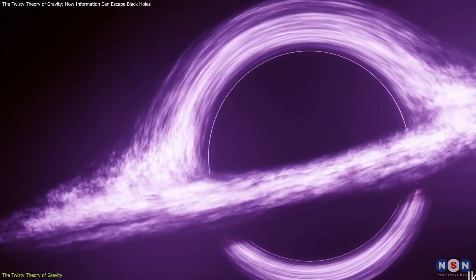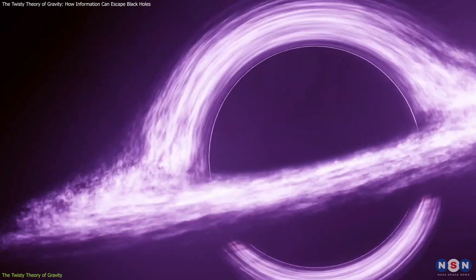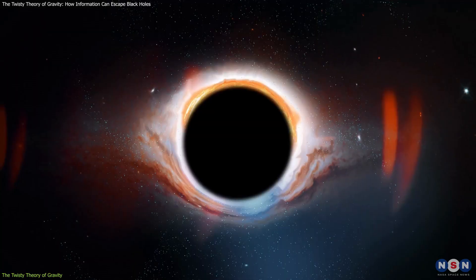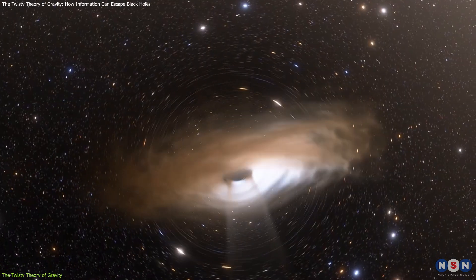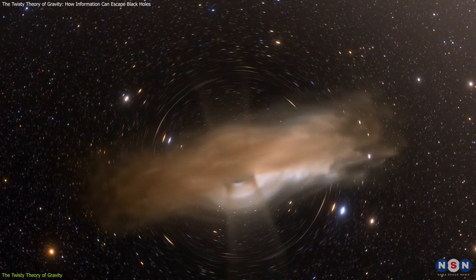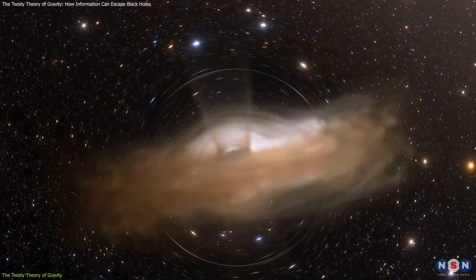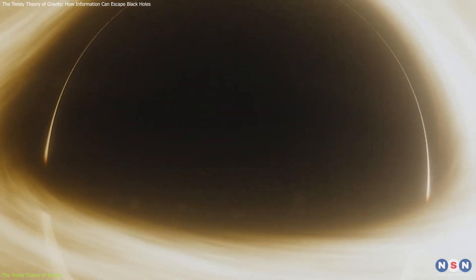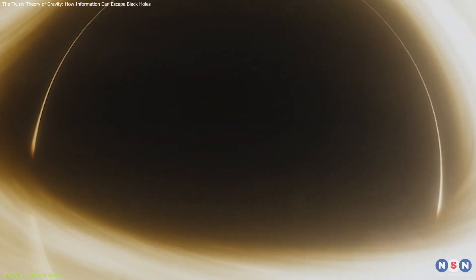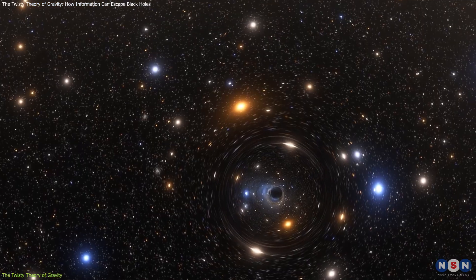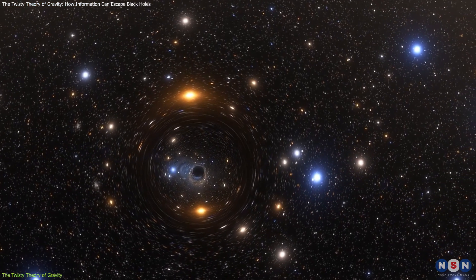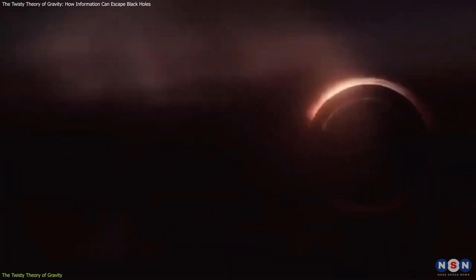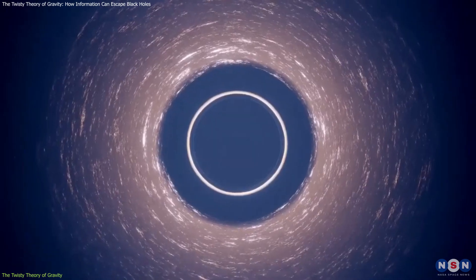However, there is a problem with applying the holographic principle to realistic black holes, which exist in a flat or positively curved space. In this case, there is no known quantum field theory that can describe the information on the boundary, and therefore no known way to recover the information from inside the black hole. This means that the holographic principle does not solve the paradox for realistic black holes unless there is a new way to encode and decode the information on their surfaces.